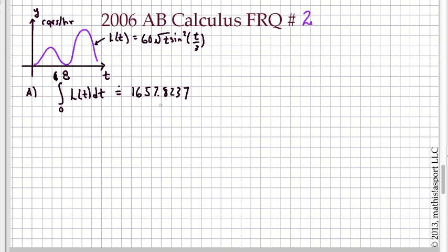We get 1657.8237. Let's double check what the problem asks for. It asks us to round to the nearest whole number, so we're going with 1658 cars. If it had said how many cars, we would have rounded down to 1657, but because it said to the nearest whole number, that's where we leave it.